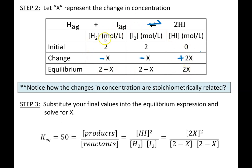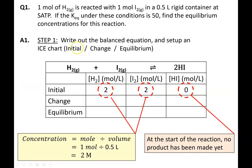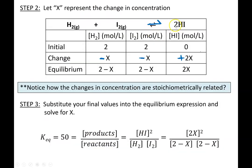This is how we fill in our ICE chart — it tracks the progress of the reaction, showing concentrations of each reactant and product initially, during the reaction, and finally at equilibrium. Now all we have to do is write out our equilibrium expression: Keq equals product concentration over reactant concentration. The Keq value was given as 50. Don't forget to use coefficients as exponents and plug in our final equilibrium values.